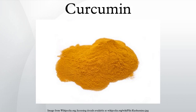Curcumin incorporates several functional groups. The aromatic ring systems, which are phenols, are connected by two alpha-beta unsaturated carbonyl groups. The diketones form stable enols and are readily deprotonated to form enolates. The alpha-beta unsaturated carbonyl group is a good Michael acceptor and undergoes nucleophilic addition. The structure was first identified in 1910 by Lampe, Kostanecki, and Wiktor Lampe.